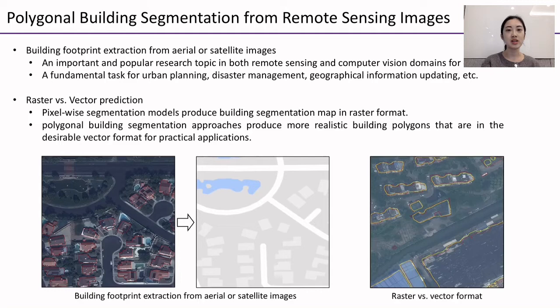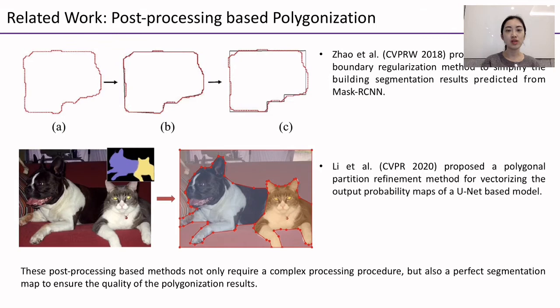Motivated by this issue, many recent studies proposed polygonal segmentation approaches to produce vectorized segmentation results. Several studies proposed post-processing based polygonization methods, which simplify the building segmentation results predicted from instance segmentation or semantic segmentation models. These post-processing based methods not only require a complex processing procedure, but also a perfect segmentation map to ensure the quality of the polygonization results.